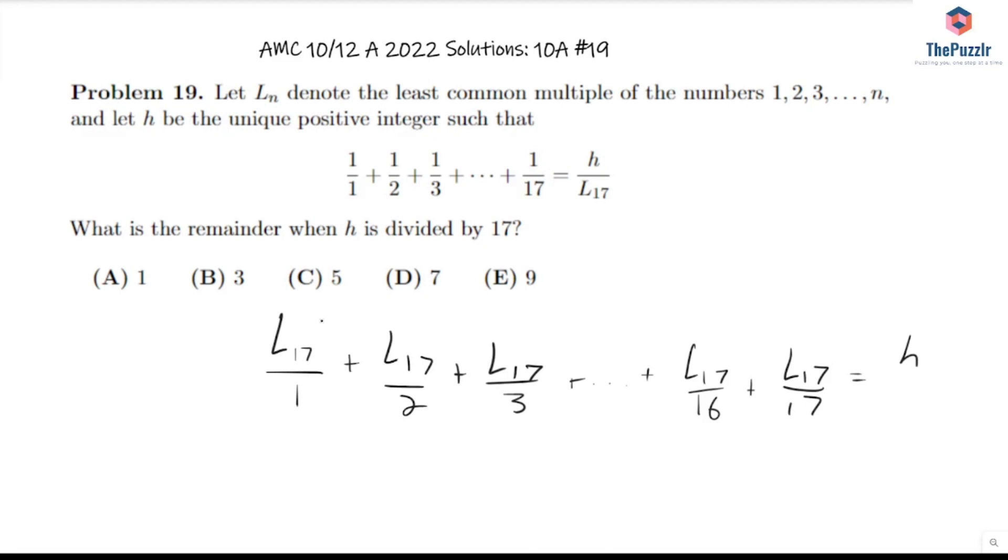Now we're trying to find the remainder when h is divided by 17. Notice that L_17 is going to contain a factor of 17 because it's the least common multiple of the numbers 1 through n, and 1 through n includes 17, so L_17 must have a factor of 17. Since each of these must be integers, since L_17 is the LCM of all of them, we can just ignore the first 16 terms. So now all we care about is the remainder of L_17 over 17 when we divide by 17.